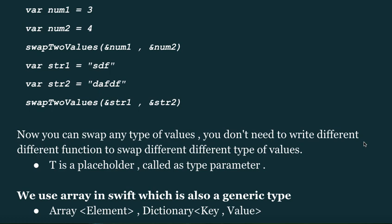Now you can swap any type of values — you don't need to write different functions for different types. `T` is a placeholder called a type parameter. We use arrays in Swift which are also a generic type: `Array<Element>`, `Dictionary<Key, Value>`.